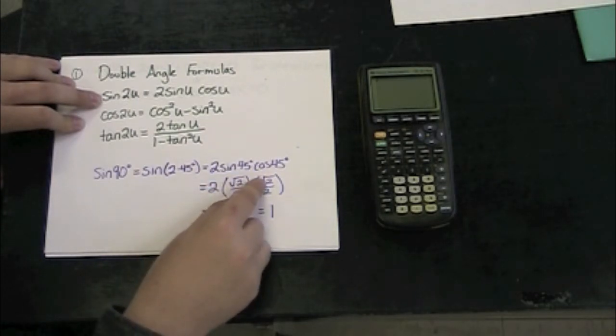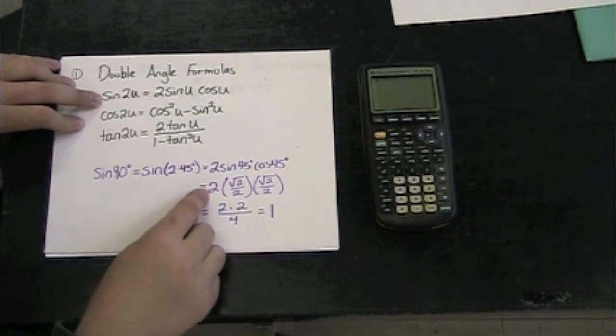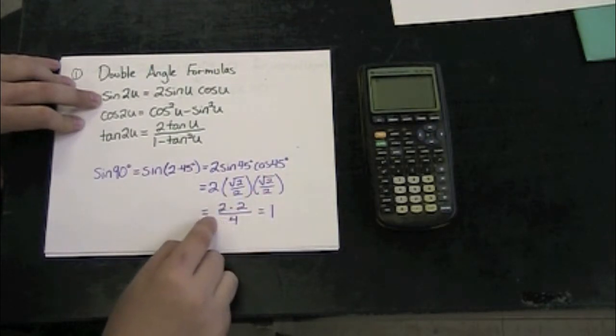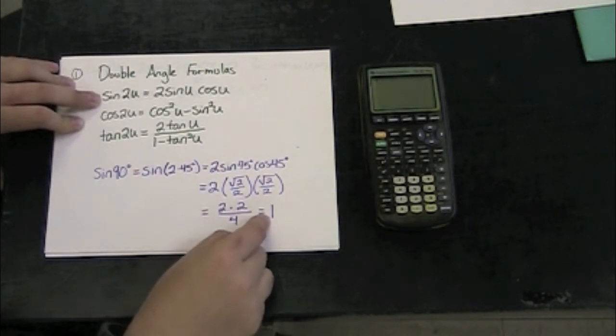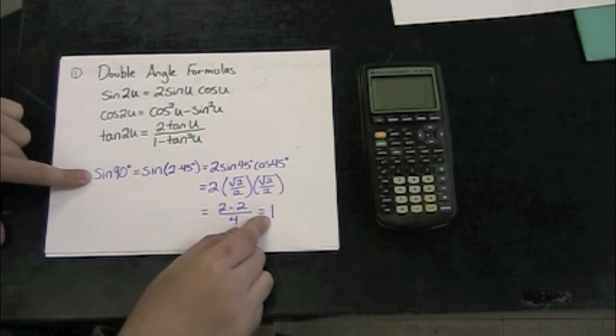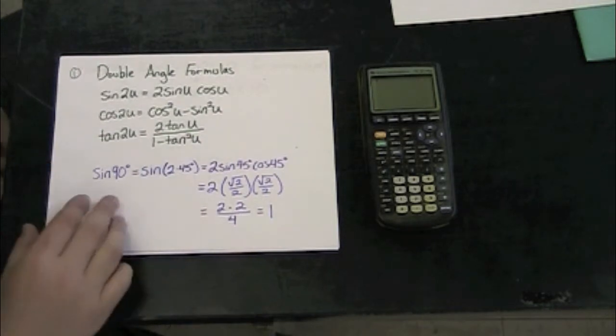The square root of 2 times the square root of 2 gives me a 2. 2 times 2 and 2 times 2 on the bottom. I have 2 times 2 over 4, which is equivalent to 1. We know the sine of 90 degrees is going to be 1, so that makes sense to us.